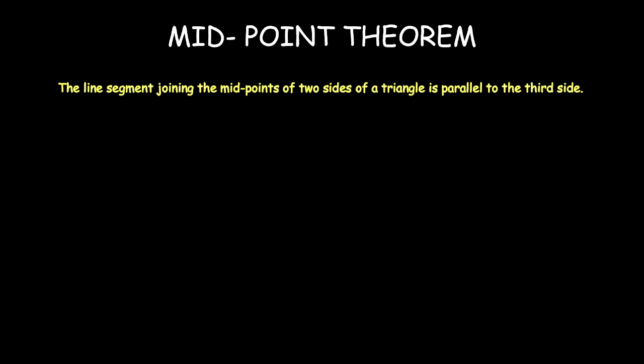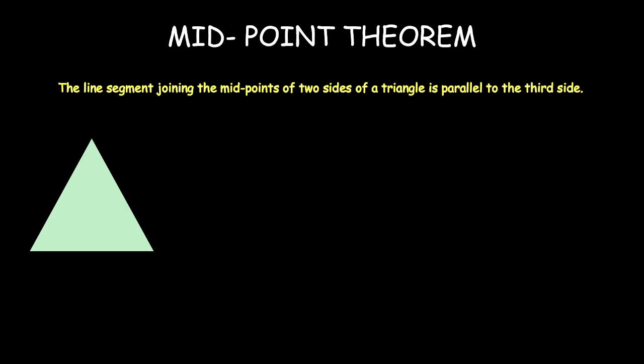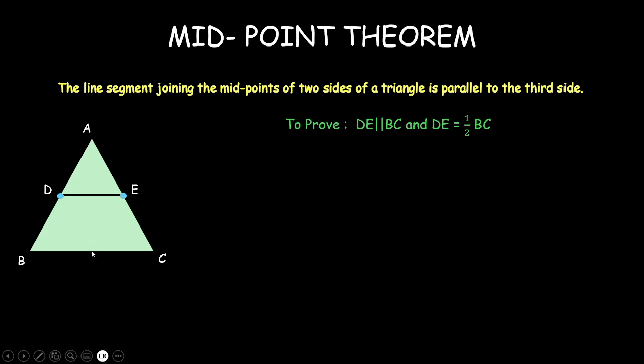For the proof, we need a triangle — let's call it ABC. We are given two midpoints: D is the midpoint of AB and E is the midpoint of AC. That is all that is given to us, and we need to prove that DE is parallel to BC and half of BC.